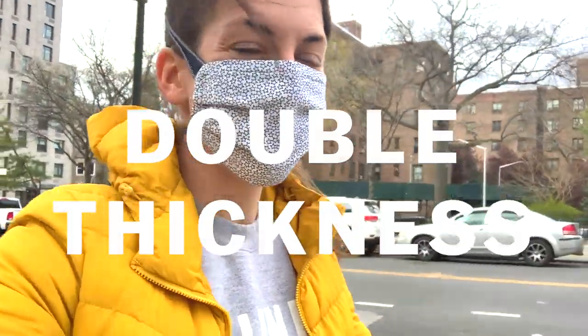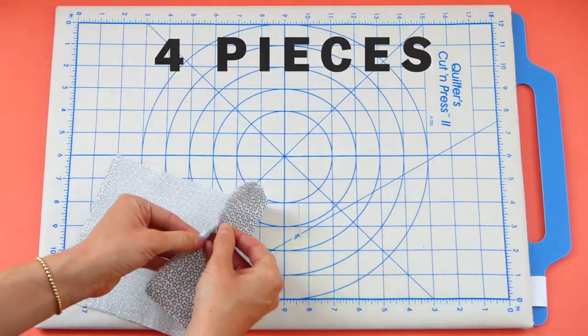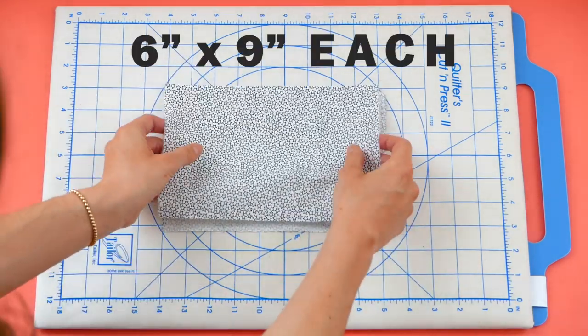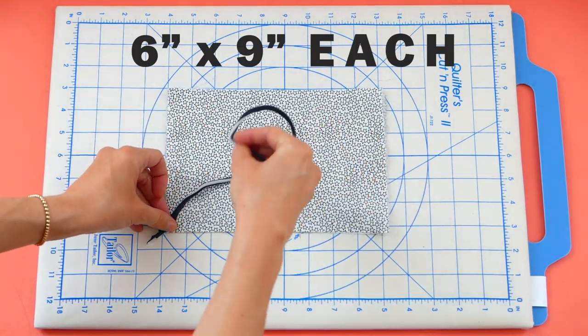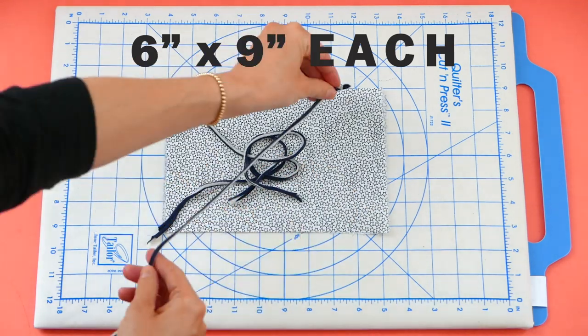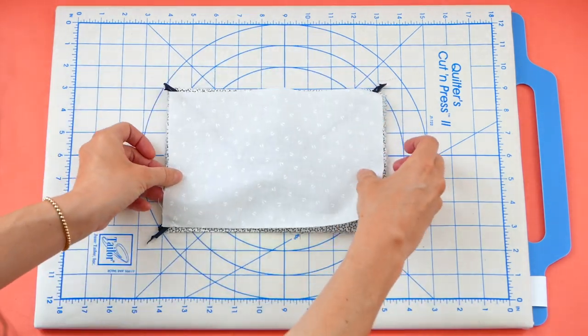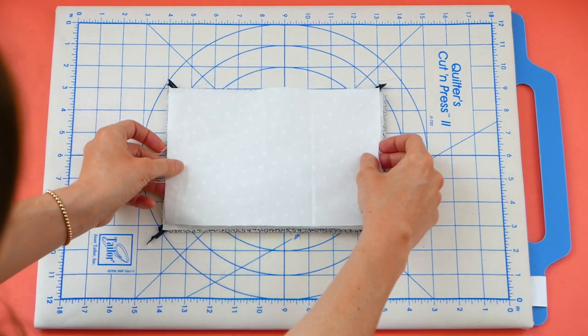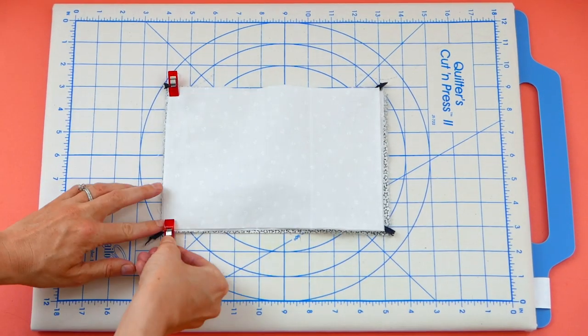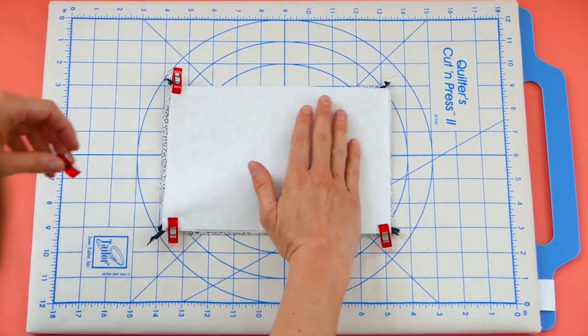And the last variation we're going to do is a double thickness mask. This has four pieces of cotton. So start with one piece of fabric on your flat surface, top that with a second piece of fabric right side up, and now put your four ties in the corner with everything going towards the center instead of off towards the sides. Top that with another piece of fabric right side down, and then top that with another piece of fabric right side down and pin everything in place.